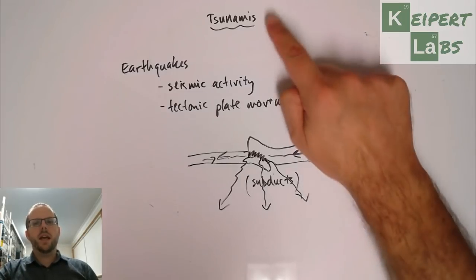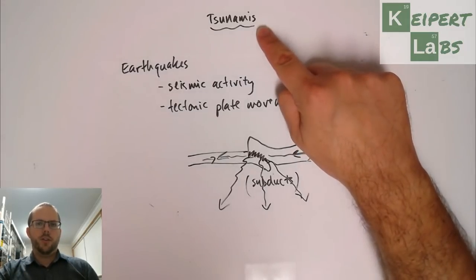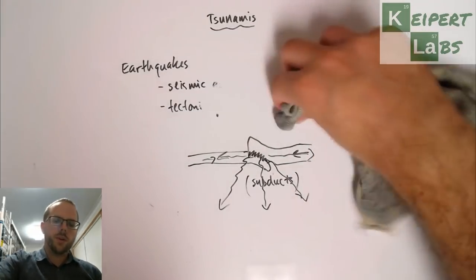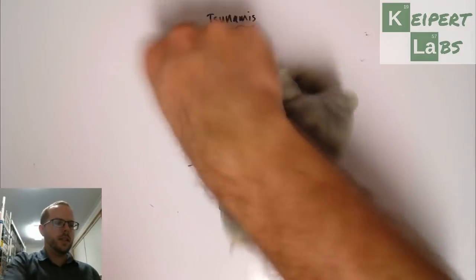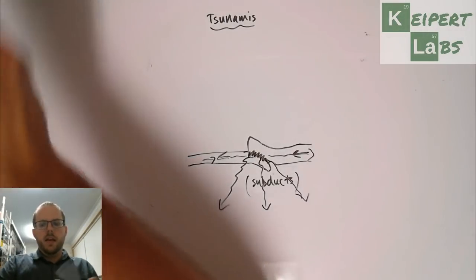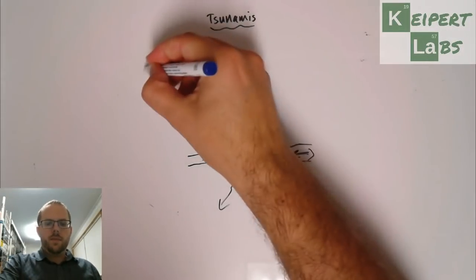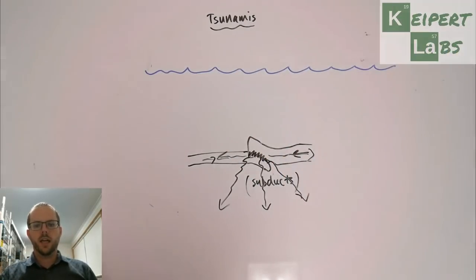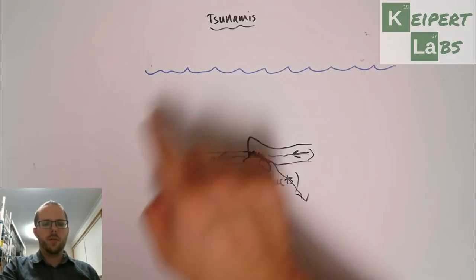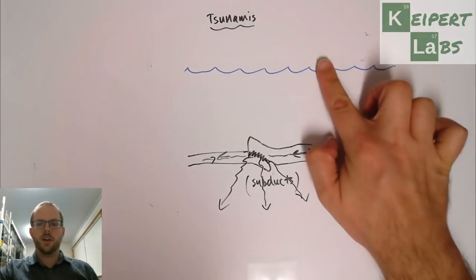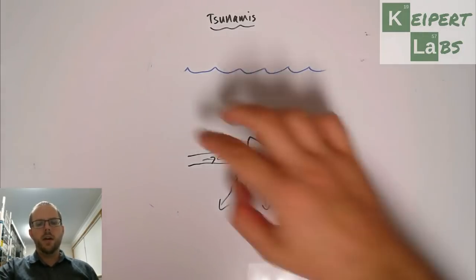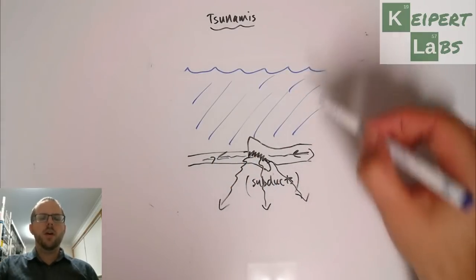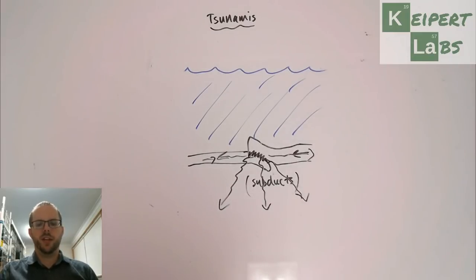One thing that often can happen with an earthquake — an underwater earthquake — is a tsunami. Picture this scenario: this is underneath the ocean, so all of this water is present above where that tectonic boundary is.